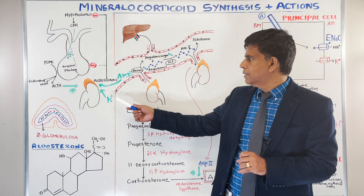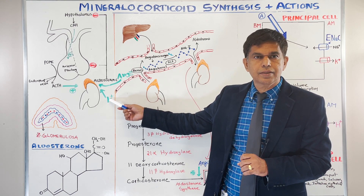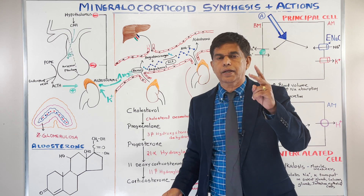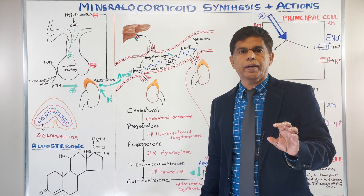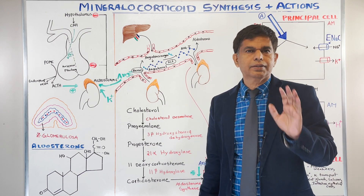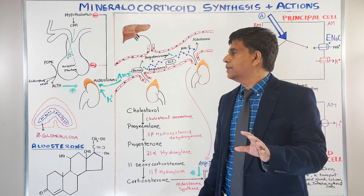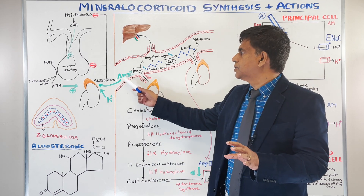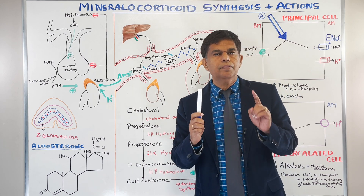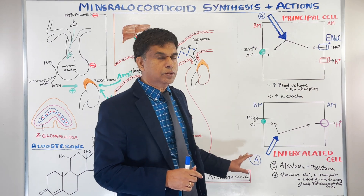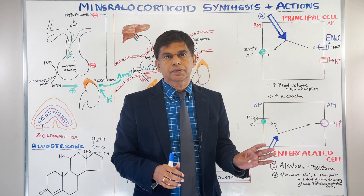The final step is corticosterone being converted into aldosterone by aldosterone synthase, stimulated by angiotensin II. The other direct stimulant is potassium. So there are three stimulants: ACTH — in a small amount and does not control the rate of secretion — and the main two are angiotensin II and potassium. Now let's look at the actions of aldosterone.